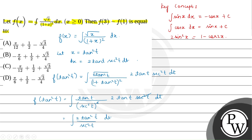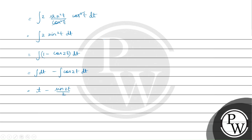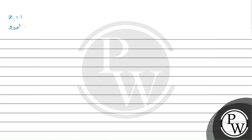In the question we have to find f of 3 and f of 1 and subtract them. For f of 3, substitute x equals 3. We have tan squared t equals 3, so tan t equals root 3, giving t equals tan inverse of root 3, which is pi by 3. For f of 1, tan squared t equals 1, so tan t equals 1, giving t equals tan inverse of 1, which is pi by 4.